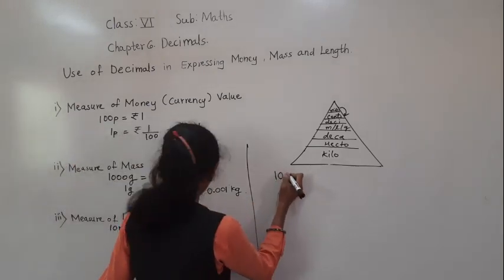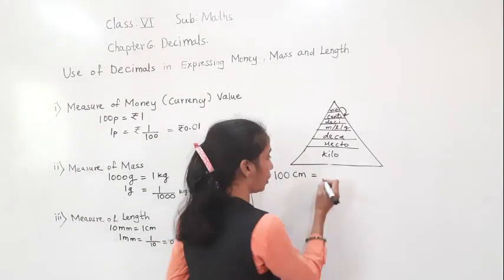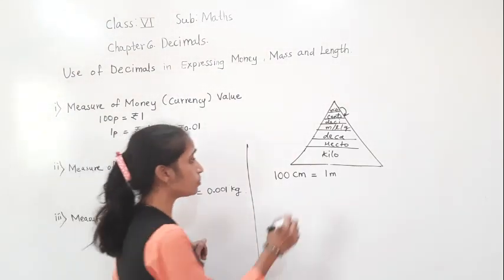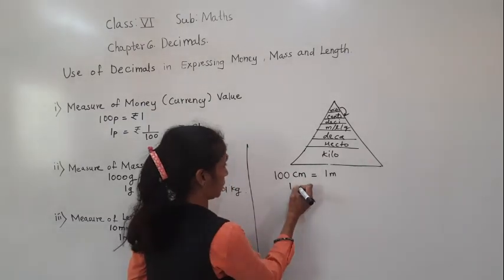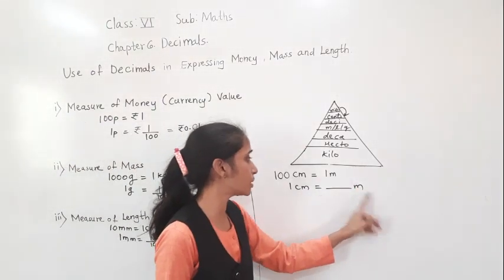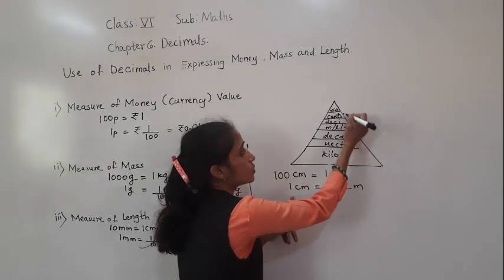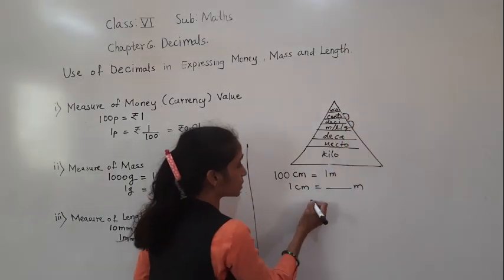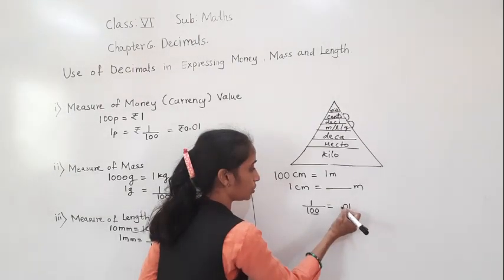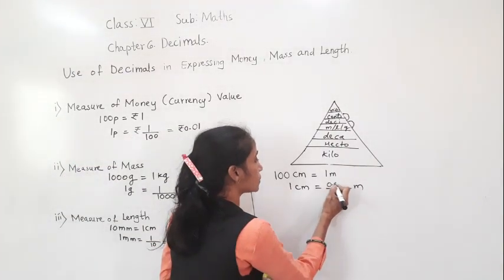Now 100 centimeter is equal to 1 meter, that we know. So 1 meter is equal to 100 centimeter. Now if I want to find 1 centimeter is equal to how much meter: centimeter is here and meter is 2 steps down, so divide by 100. There are 2 zeros, so shift the decimal point before 2 digits. We get 0.01 meter. So 1 centimeter is equal to 0.01 meter.